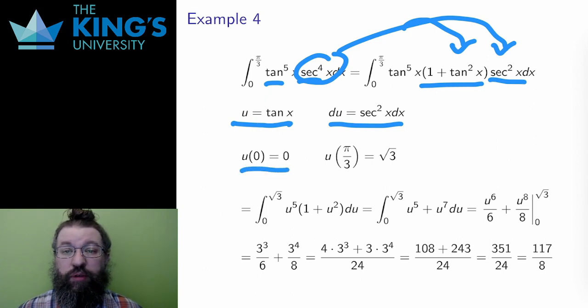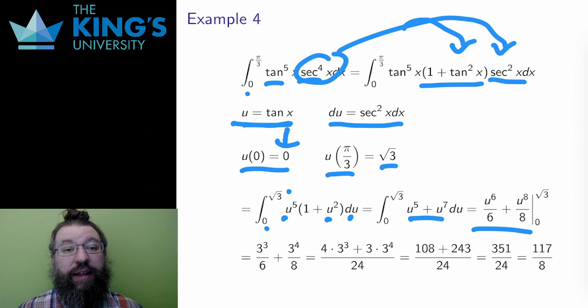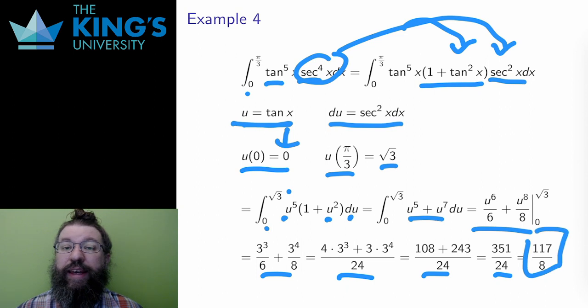Then everything is tangent except for the secant squared, so I use the tangent substitution. u equals tan x, and du equals secant squared x dx. There are bounds here, so I also change the bounds. When x is 0, u is tangent of 0, which is also 0. And when x is pi over 3, u is tangent of pi over 3, which is root 3. Then I replace all the pieces to get this integral. I multiply the polynomial out, and I split the integral up using linearity. I calculate both of the integrals and evaluate on the bounds. After simplifying all these resulting fractions, I get 117 over 8 as the area under the curve.